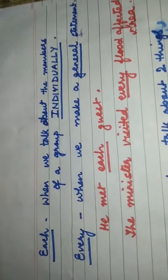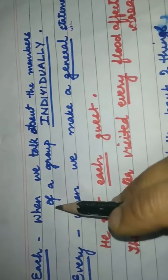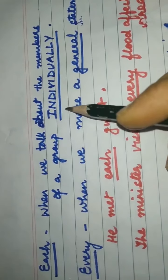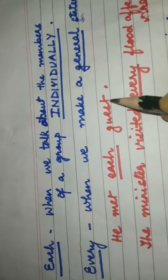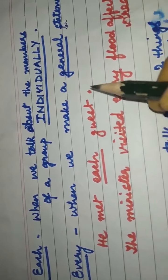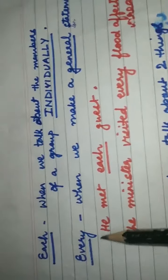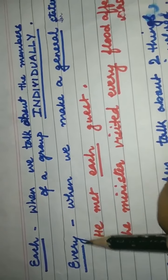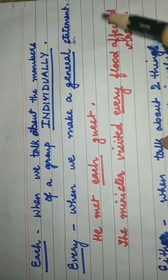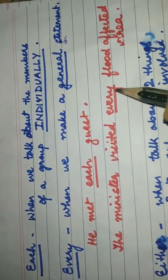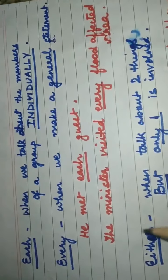Here are some more determiners. 'Each' is used when we talk about the members of a group individually — for example, 'he met each guest', meaning he met each of the guests individually. 'Every' is used when we make a general statement about a group — for example, 'the minister visited every flood-affected area' — a general statement that he visited every flood-affected area.